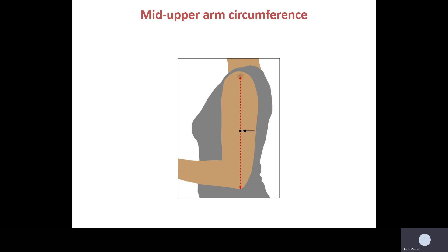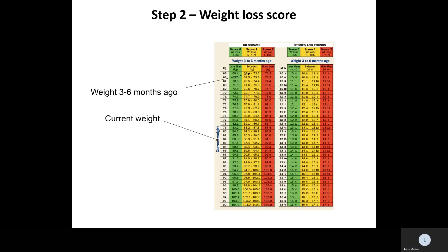Mid-upper arm circumference is another useful measure to quantify risk. It's not sensitive in identifying body composition as it doesn't discriminate between fat and muscle, but it will tell you how thin, overweight, or normal weight someone is — a very thin person will have a low mid-upper arm circumference. For the weight loss score, you compare current weight with weight three to six months ago to determine how much has been lost and assess whether the risk is green, amber, or red.